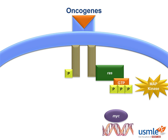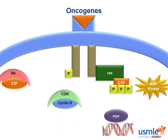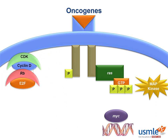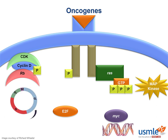MYC works as a transcription factor for cyclin-D. Cyclin-D pairs with cyclin-dependent kinase, or CDK. Together, cyclin-D and CDK phosphorylate the retinoblastoma tumor suppressor protein, which releases E2F. E2F helps the cell cycle progress through. The specific cell cycle checkpoint tested on USMLE is G1 to S — the key checkpoint for E2F — where DNA synthesis occurs the most.